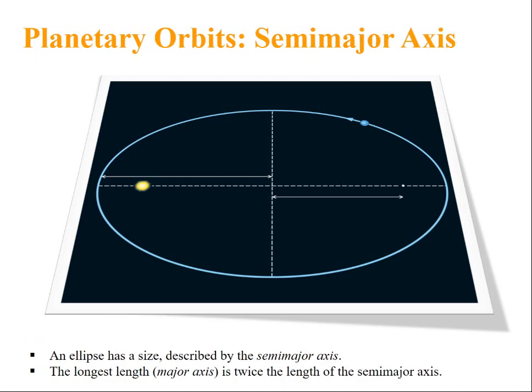Another important vocabulary that you should know while dealing with planetary orbits is semi-major axis. An ellipse has a size described by semi-major axis. The longest length is twice the length of semi-major axis.